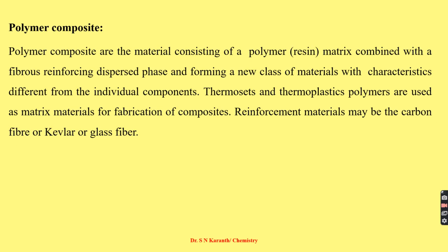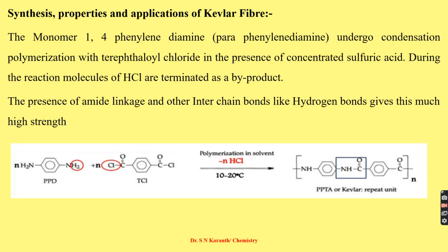Polymer composites consist of a polymer matrix combined with a fibrous reinforcing dispersed phase, forming a new class of material whose characteristics are entirely different from those of the individual components. Thermosetting and thermoplastic polymers are usually used as the matrix for fabrication. Reinforcing materials may be carbon fiber, Kevlar, or glass fibers.